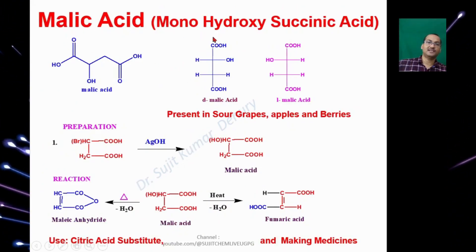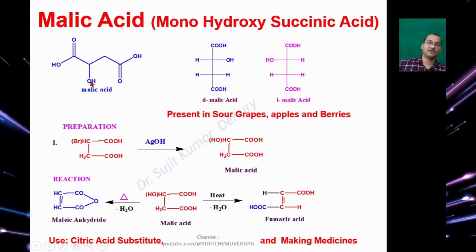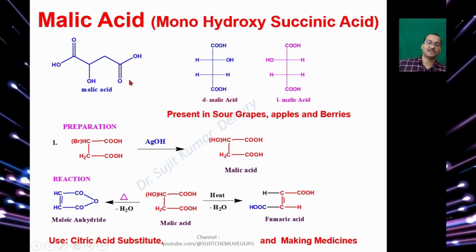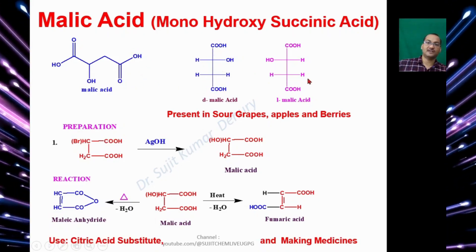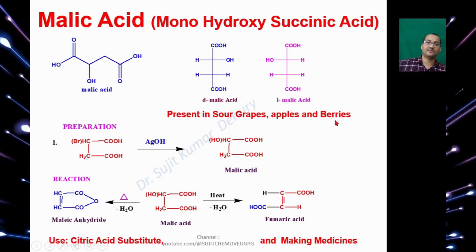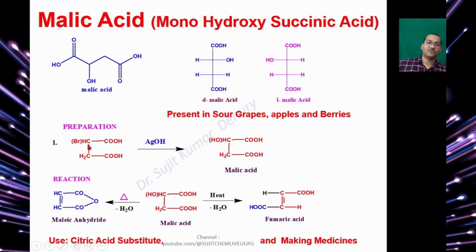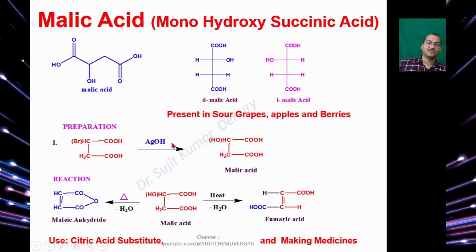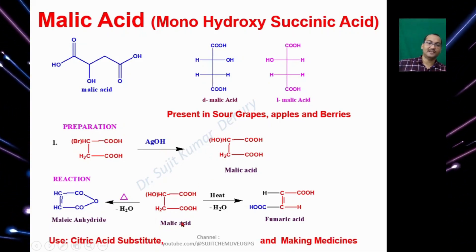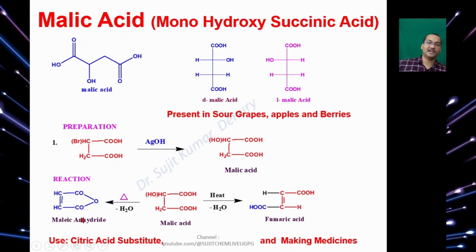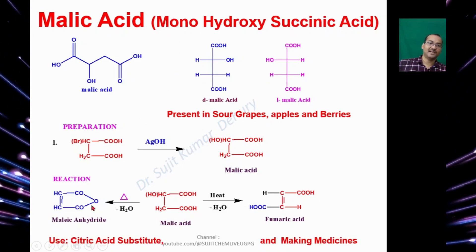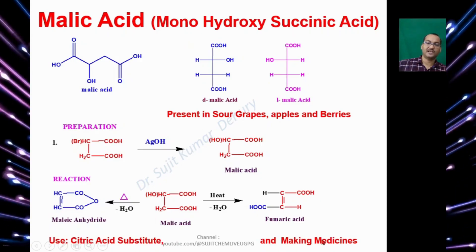Malic Acid is monohydroxysuccinic acid — one hydroxyl group and two carboxylic acid groups. There is a D form and an L form of Malic Acid. Malic Acid is present in sour grapes, apples, and berries. Starting from the monobromo derivative of the dicarboxylic acid with Silver Hydroxide gives Malic Acid. Malic Acid upon heating gives Maleic Anhydride and Fumaric Acid. Malic Acid is used as a Citric Acid substitute and in making medicines.